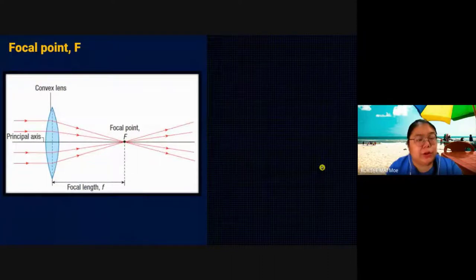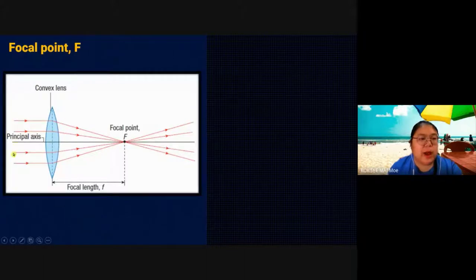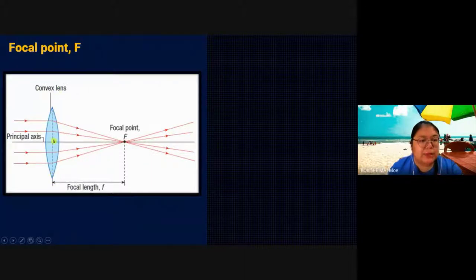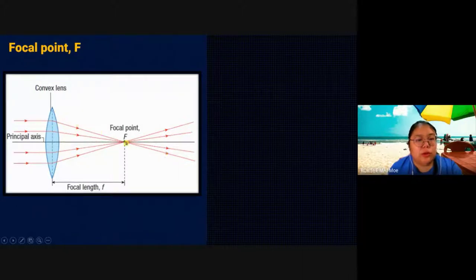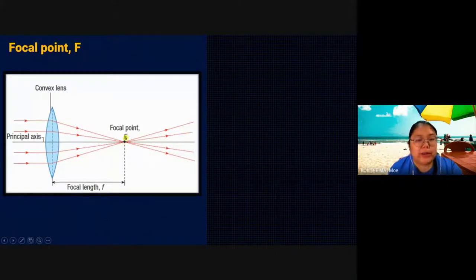Now we go to convex first. For the convex lens, normally when light is parallel, after passing through, remember you must draw one dotted line at the middle of the convex lens. After passing the dotted line, the ray starts to refract and goes to the focus point. This is the focal point, and all rays will meet here. The distance from the lens to F we call the focal length.